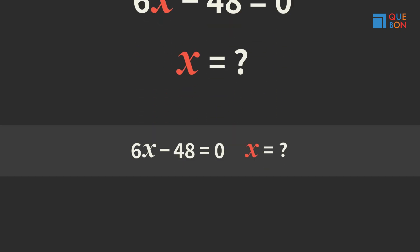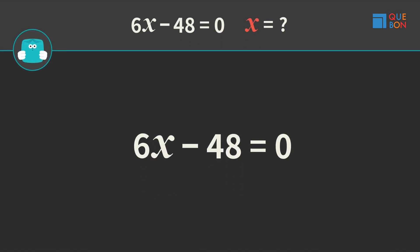Let's take a look at Sweaty's method. Sweaty instantly thinks of transposition after looking at the problem, so Sweaty moves negative 48 to the right side of the equation.